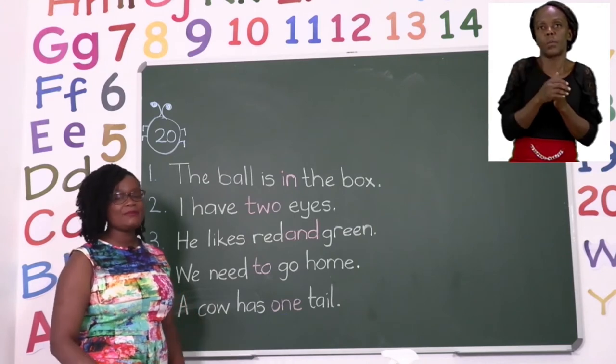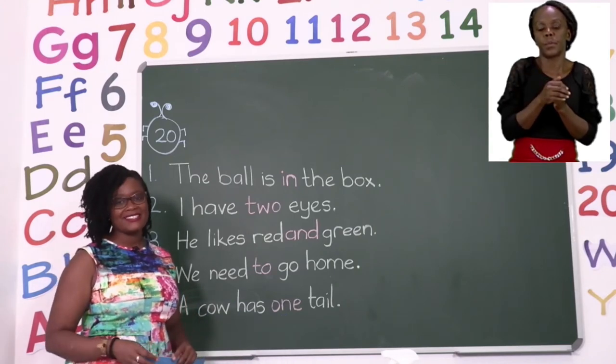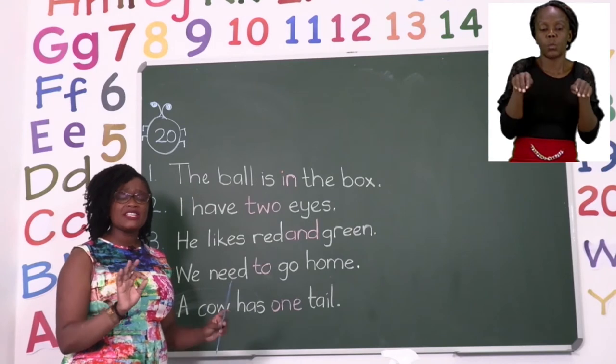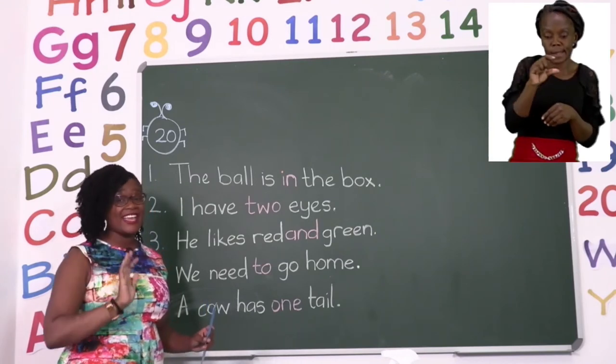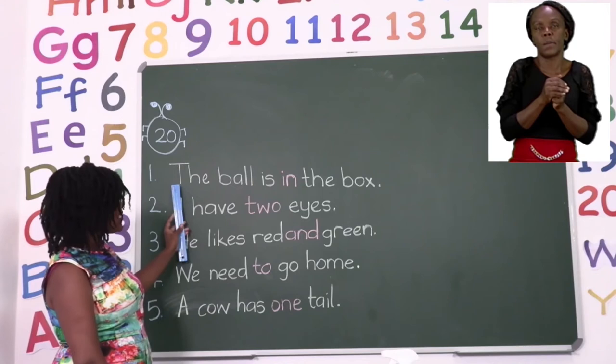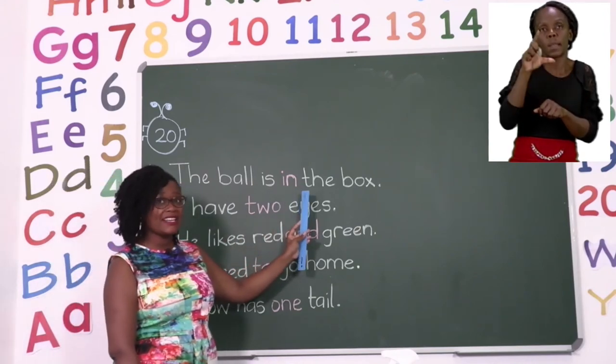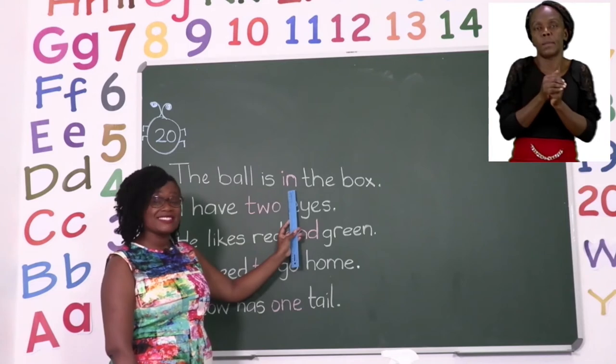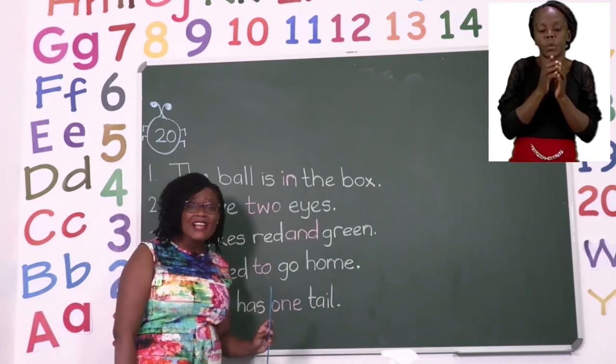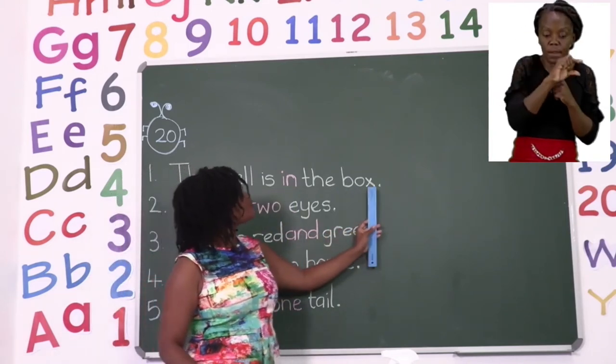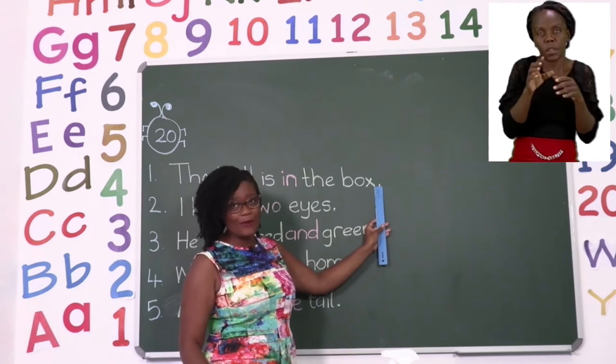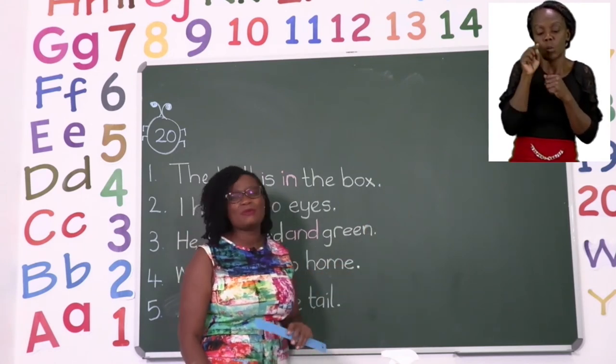So you can make up your own sentences. But before you do, you need to make sure that first it makes sense in your head. Then you start with a capital letter and make sure you spell all your words correctly. Don't forget to put your sight word. And when you are done with your sentence, you put a full stop. Otherwise your sentence will be wrong.